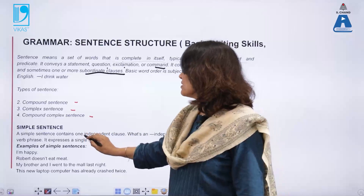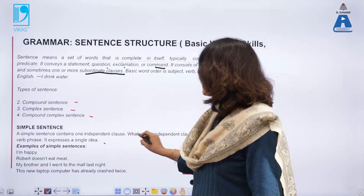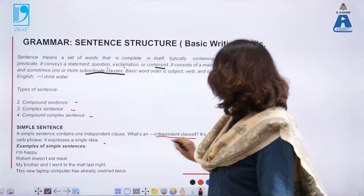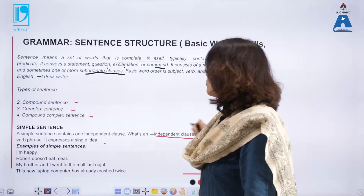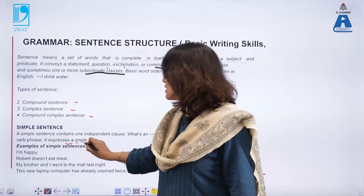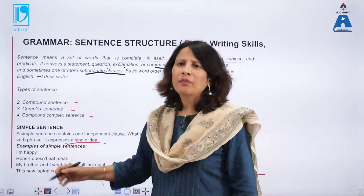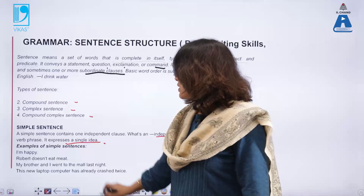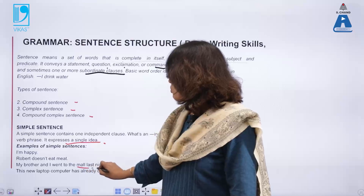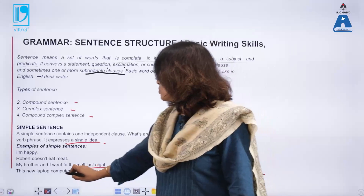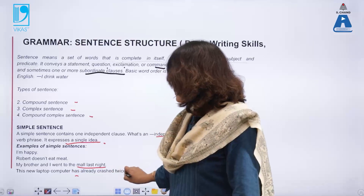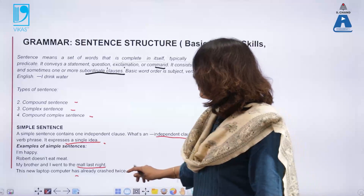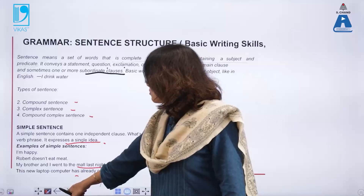A simple sentence contains one independent clause — one subject followed by a verb phrase. It expresses a single idea. Examples: 'I am happy.' 'Robert does not eat meat.' 'My brother and I went to the mall last night.' 'This new laptop computer has already crashed twice.' Simple sentences convey meaning in a simple form.